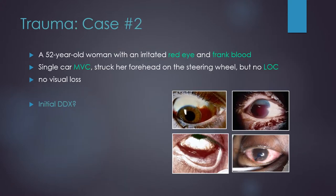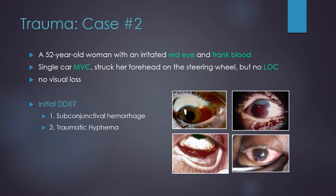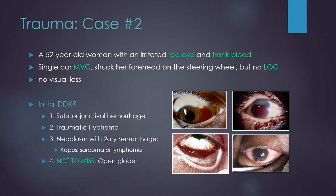Let's do another case. A 52-year-old woman presents with an irritated red eye and frank blood. She sustained a single car motor vehicle crash in which she struck her head on the steering wheel, but had no loss of consciousness. She has no visual loss. Your initial differential should include subconjunctival hemorrhage, traumatic hyphema, secondary hemorrhage due to a neoplasm, and it's important not to miss an open globe.